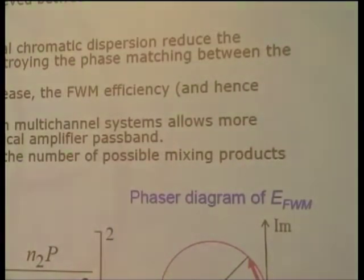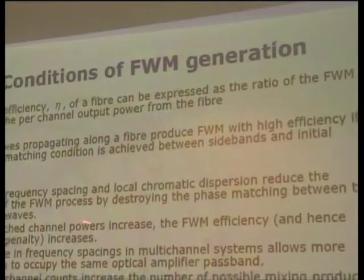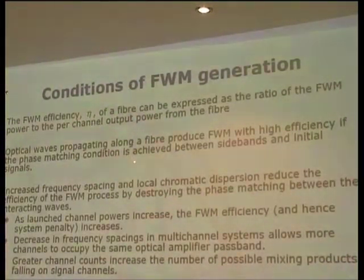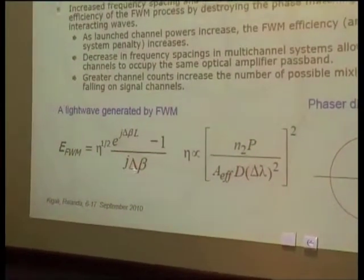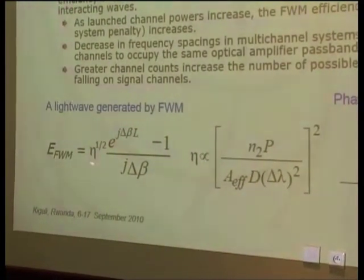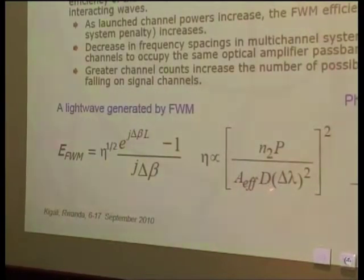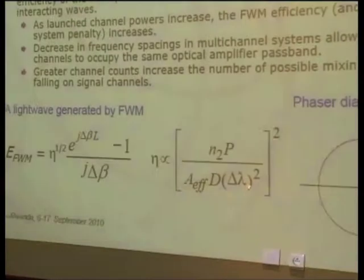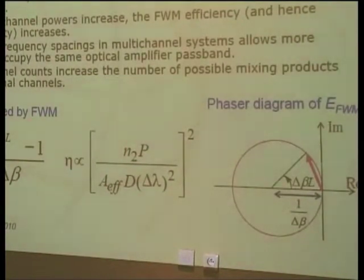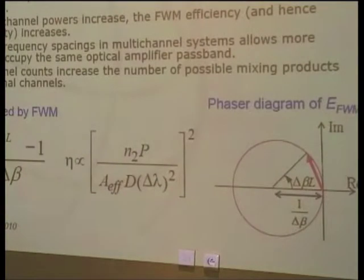Four-wave mixing light is affected by dispersion value, power, and similar parameters. The equation for light generated by four-wave mixing includes delta-beta, which represents the group velocity dispersion or amount of dispersion. The efficiency of four-wave mixing is also affected by dispersion, channel spacing, and power. As power increases, four-wave mixing increases. As dispersion increases, four-wave mixing decreases. As channel spacing increases, four-wave mixing decreases.